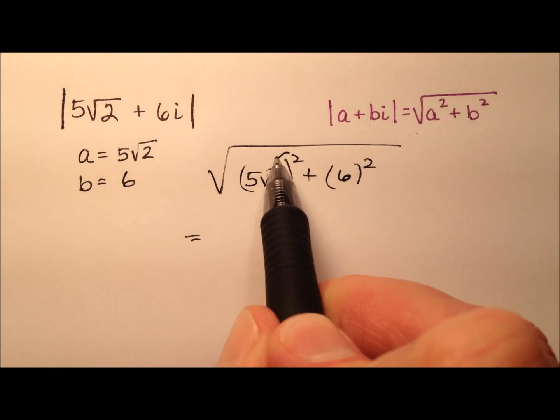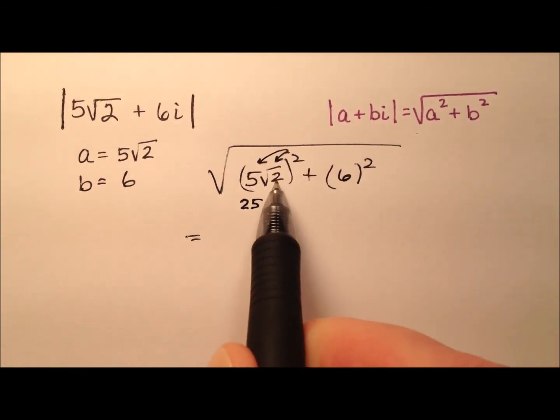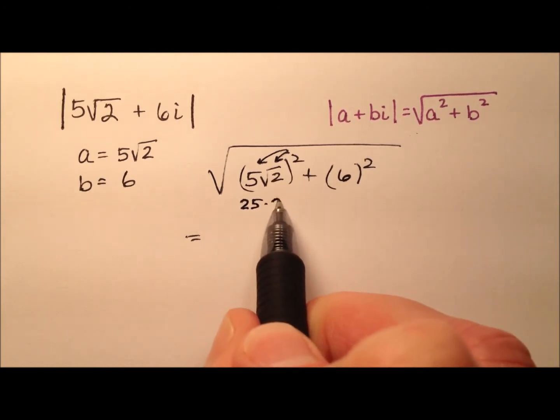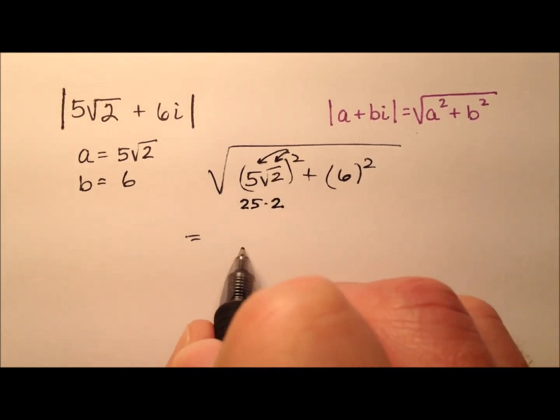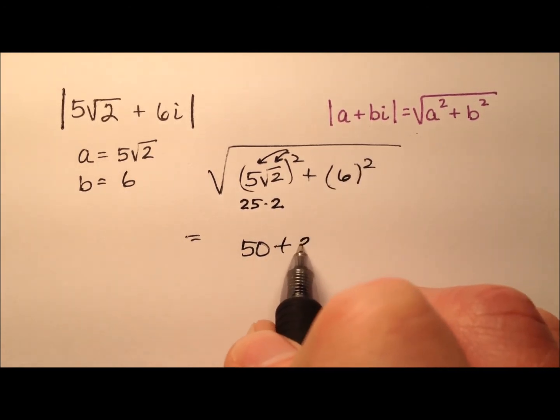So when I square this one, it's going to be 5 squared is 25, and then the square root of 2 squared is 2. So 25 times 2 is 50, and of course 6 squared is 36.